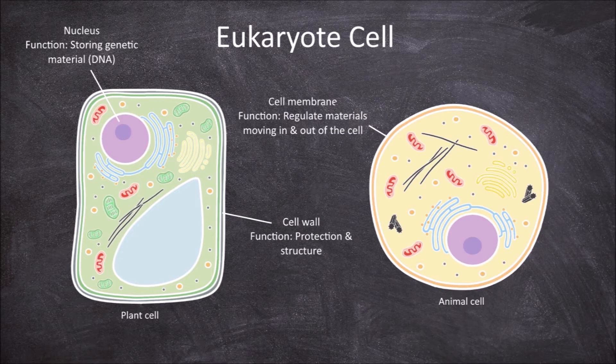Within the eukaryotic cell is a jelly-like fluid called the cytosol. Coming from the nucleus, you get the smooth and rough endoplasmic reticulum, called the ER for short.